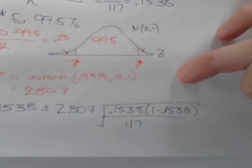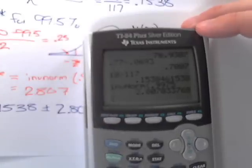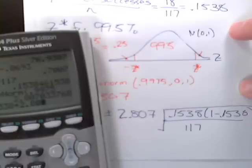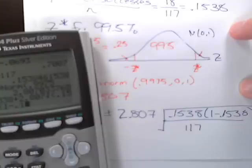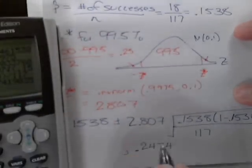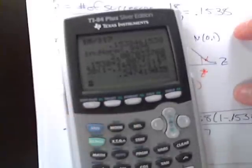Typing this into the calculator: 0.1538 plus 2.807 times the square root of 0.1538 times 1 minus 0.1538 divided by the sample size of 117. This gives a right value of 0.2474.